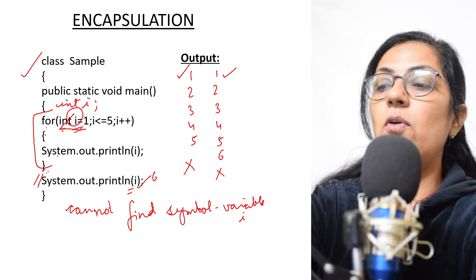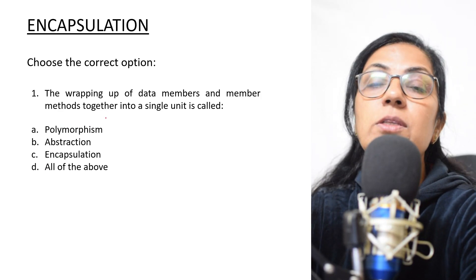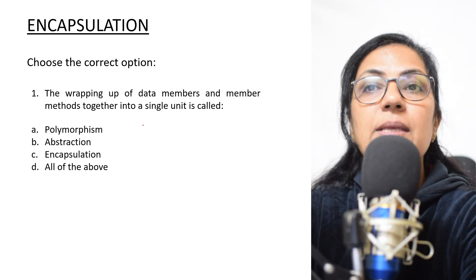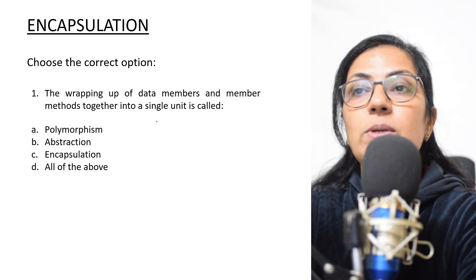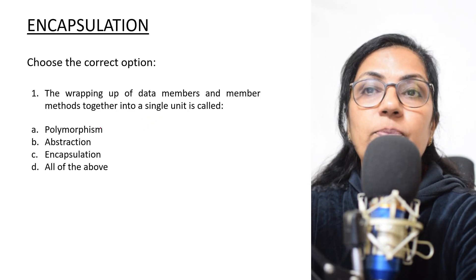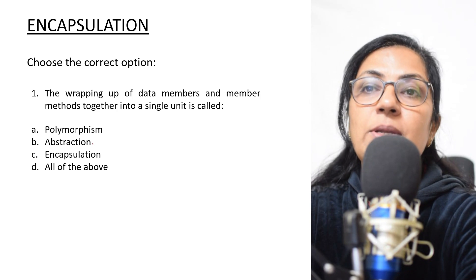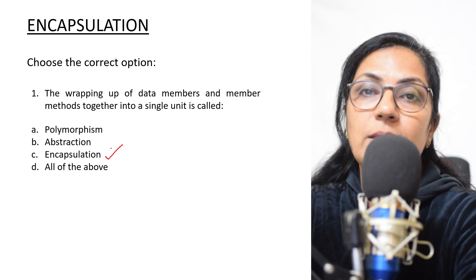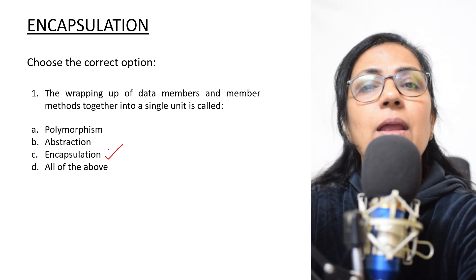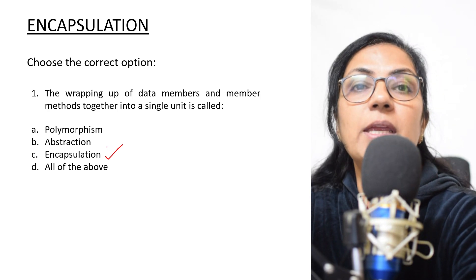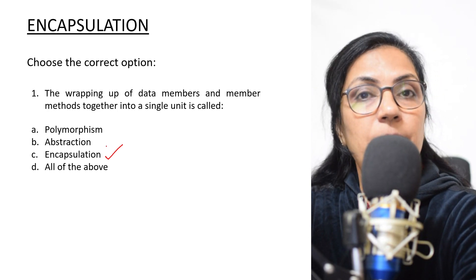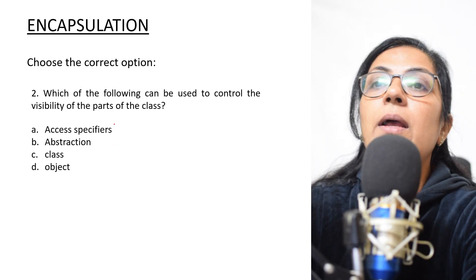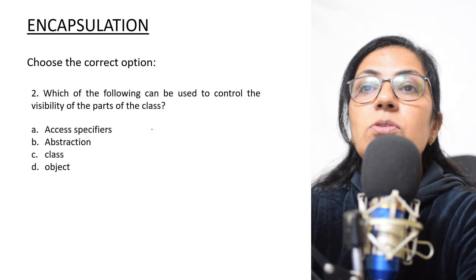Now we move on to some MCQ questions. Question: 'The wrapping up of data members and member methods together into a single unit is called...' The options are: polymorphism, abstraction, encapsulation, and all of the above. Since we have done this definition many times — the wrapping up of data members and functions is termed as encapsulation.